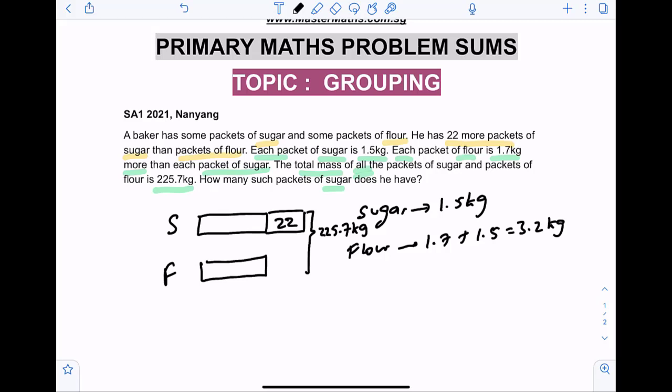Now to do this question, we need to make the items the same. Once we make the items the same, we can group the items in a set, find the number of groups, and subsequently find the number of packets of sugar. So how do we make it the same? We add another 22 packets of flour.